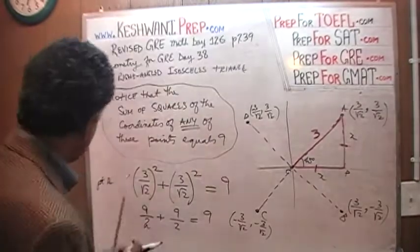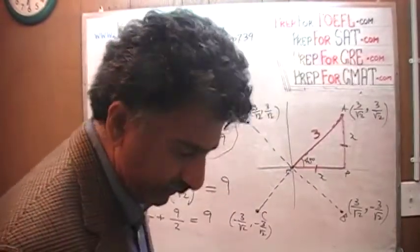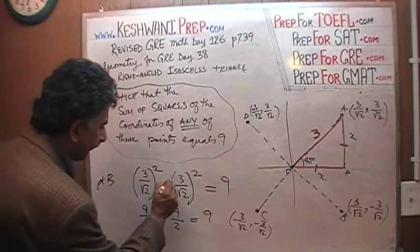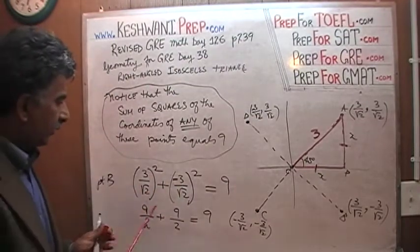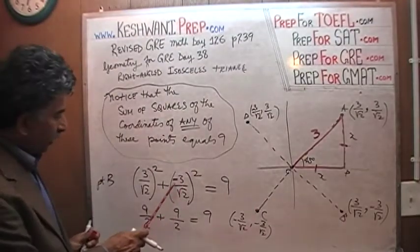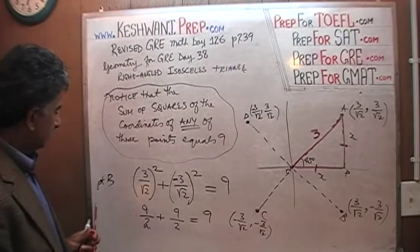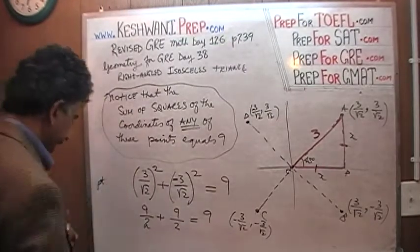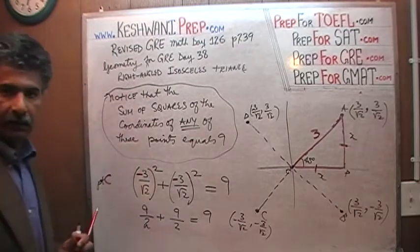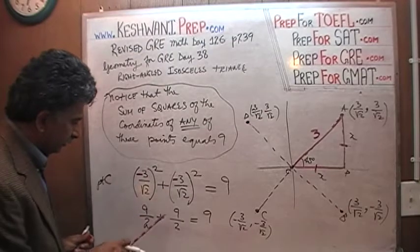Now let's go to point B. The only thing that changes is the y-coordinate is negative — it is the same value, but negative. Well, it doesn't change anything because it is being squared. The square of negative 3 is still 9, so 9 over 2 and 9 over 2 gives us 9. For point C, both coordinates are negative, which still doesn't matter — the square of negative 3 is 9, so 9 over 2 and 9 over 2 gives us 9.